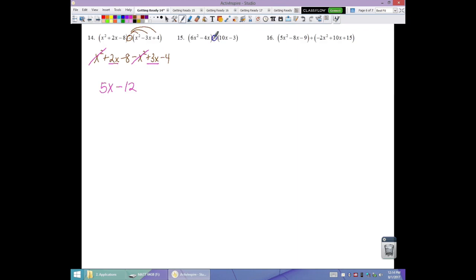Number 15, also subtraction, so we distribute the negative sign. We see 6x squared minus 4x. We turn this into minus 10x and plus 3. Our only like terms are these two in the middle, so we see 6x squared minus 14x and plus 3.